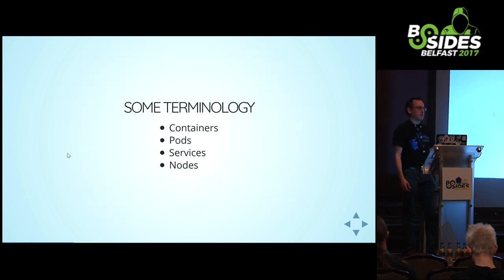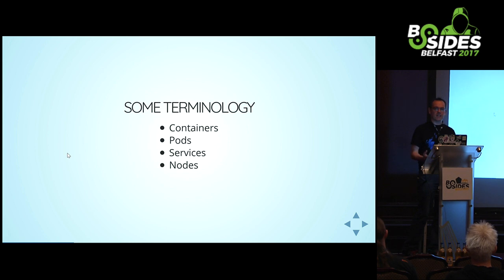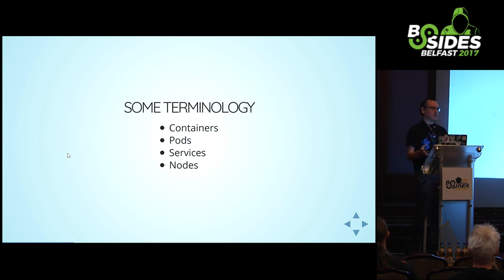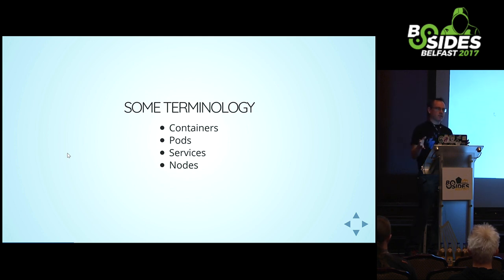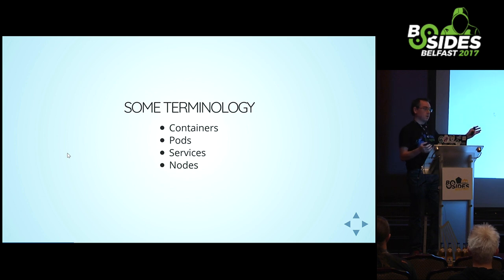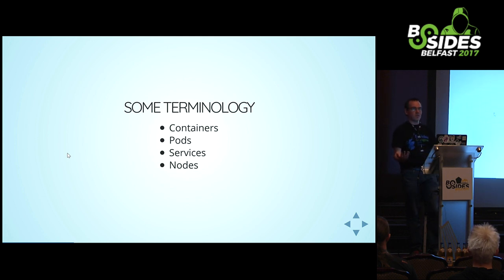A little bit of terminology. Containers are Docker containers - isolated Linux applications bundled into a package and isolated from the rest of the system. Pods are closely grouped sets of containers that share things like the same network space. Services are what get exposed to the outside world - pods live in the cluster but the service is what the outside user sees. Nodes are just the nodes in my cluster. I'll mention pods a lot because everything in Kubernetes seems to be pods.